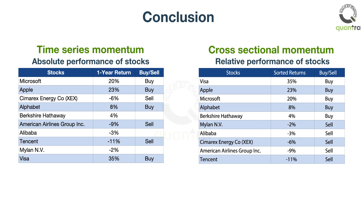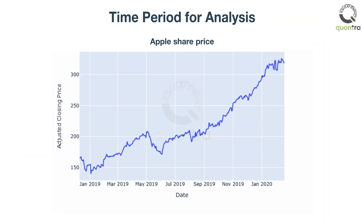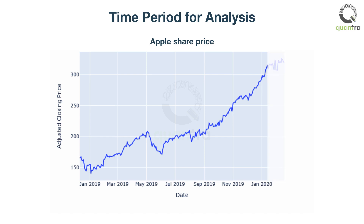Most securities exhibit cross-sectional or time series momentum. Usually, we look at the price chart for the duration of one year to see momentum. It is observed that if we look at the past month only, it exhibits a mean reverting property. Thus, institutions skip the latest month.